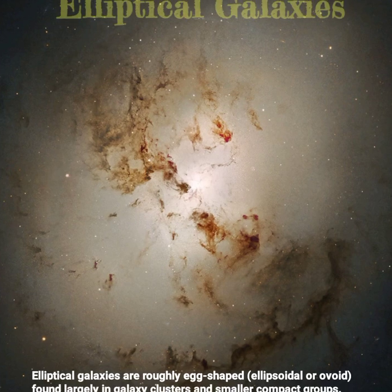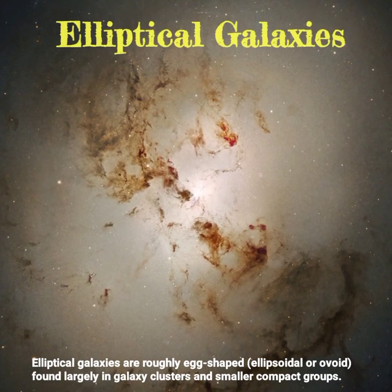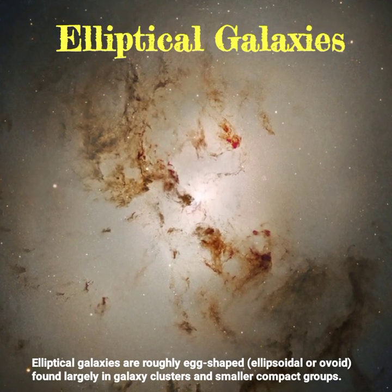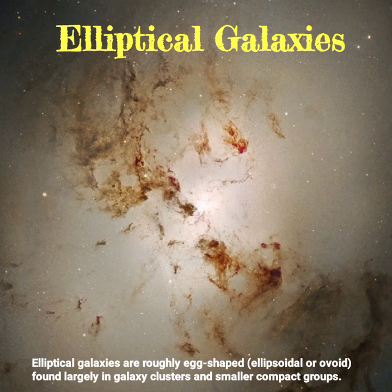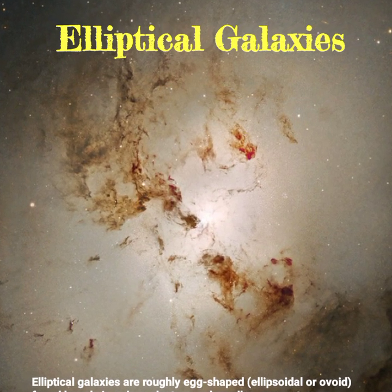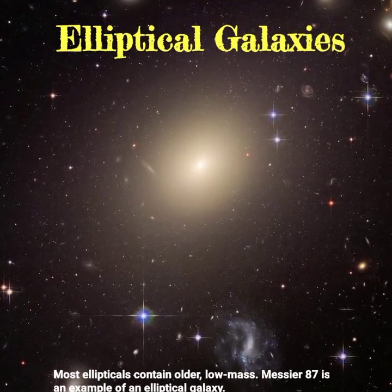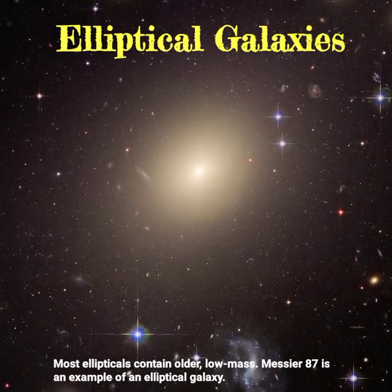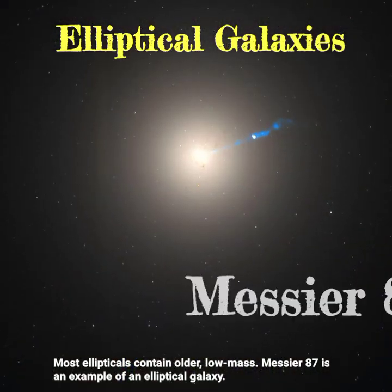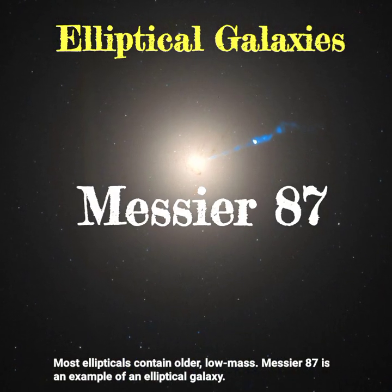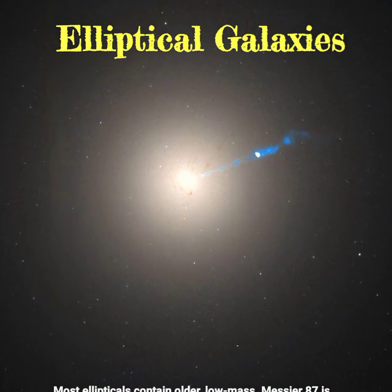Elliptical galaxies are roughly egg-shaped, ellipsoidal or ovoid, found largely in galaxy clusters and smaller compact groups. Most ellipticals contain older, low-mass stars. Messier 87 is an example of an elliptical galaxy.